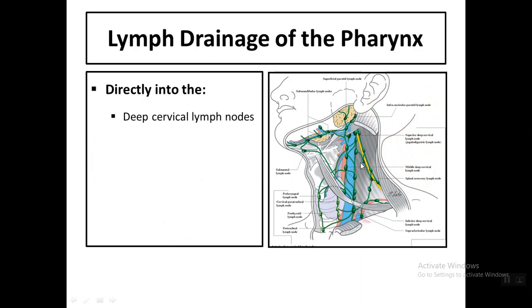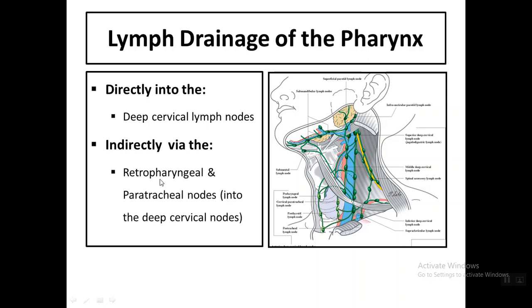The lymphatic drainage of the pharynx drains directly into the deep cervical lymph nodes, or indirectly via retropharyngeal and paratracheal lymph nodes, which then drain into the deep cervical nodes.